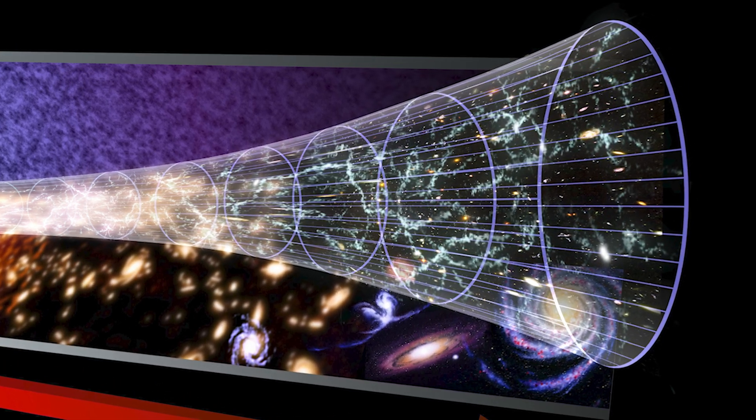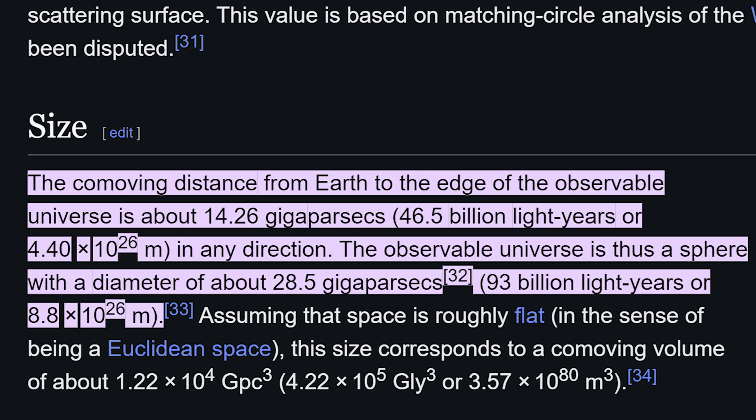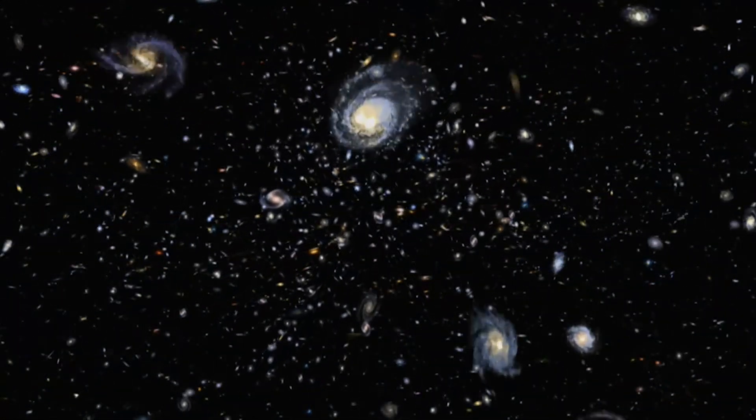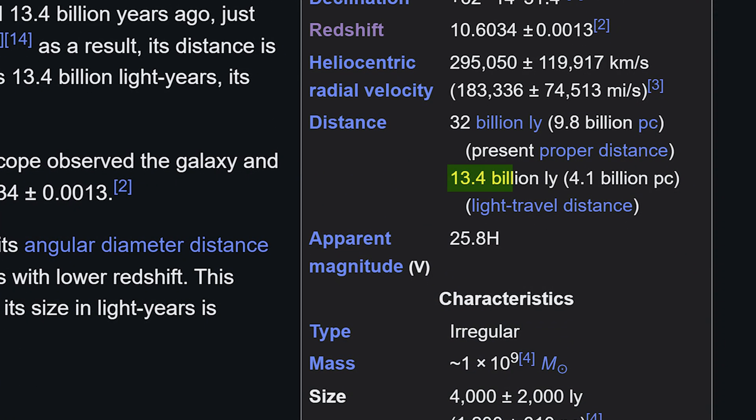But the observational data says something else that challenges today's understanding of physics. According to observation, from Earth to the edge of our observable universe is about 46.5 billion light years. So it's confirmed that our universe is expanding, but it's technically impossible because it is expanding at a speed greater than the speed of light.